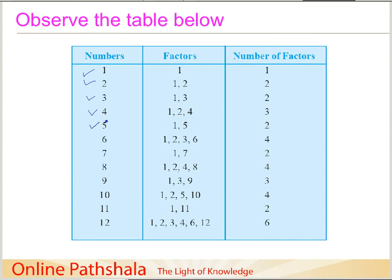When we come to number 5, it is a bit unique — the only factors of 5 are 1 and 5, because there is no other way to make 5 through multiplication. So 5 has only 2 factors. For number 6, the factors are 1, 2, 3, and 6, giving 4 factors. For number 7, another interesting thing happens — the only factors are 1 and 7 itself, so number 7 also has only 2 factors.